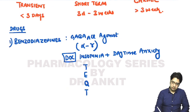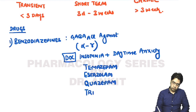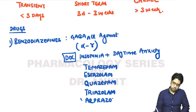The benzodiazepines used for insomnia are Temazepam, Estazolam, Quazepam, Triazolam, and also the well-known drug Alprazolam. These are the benzodiazepines.